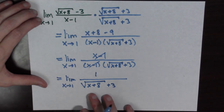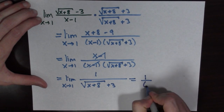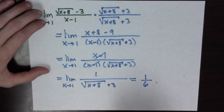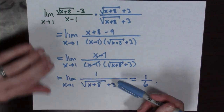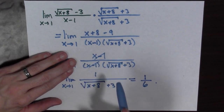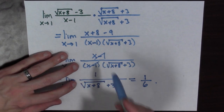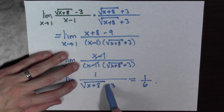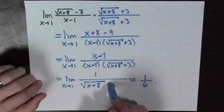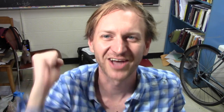At this point we can just evaluate at x equals 1, so this is equal to 1 sixth. We should point out that this function is not equal to the original one because when you evaluate x at 1 the original is undefined and this one equals 1 sixth. However, these two functions agree near x equals 1, and that's why the limits are equal.